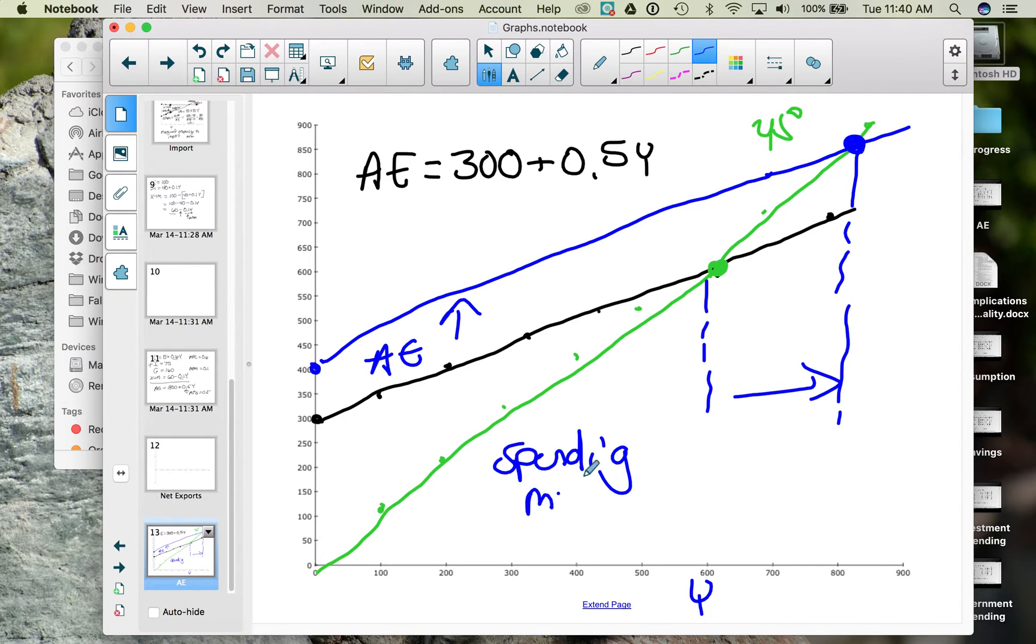The spending multiplier tells us that if we increase aggregate expenditures by, say, $1, how much does that increase income? To calculate the spending multiplier, it is 1 divided by 1 minus MPE. Well, in this example...